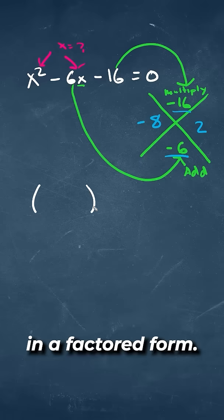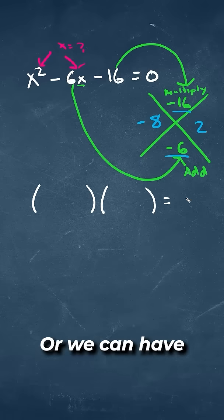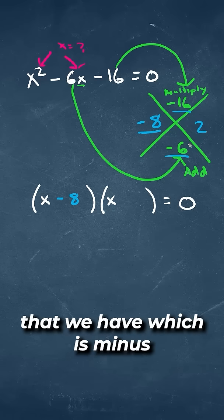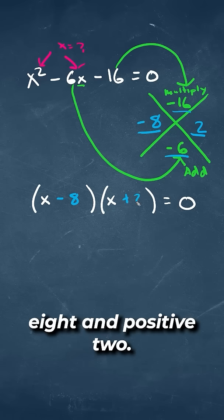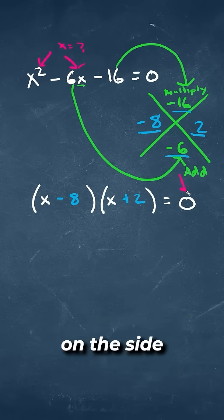We can then put this in a factored form, where we're going to have it equal to 0, and each one of our parentheses will have an x, followed by the numerical values that we have, which is -8 and +2.